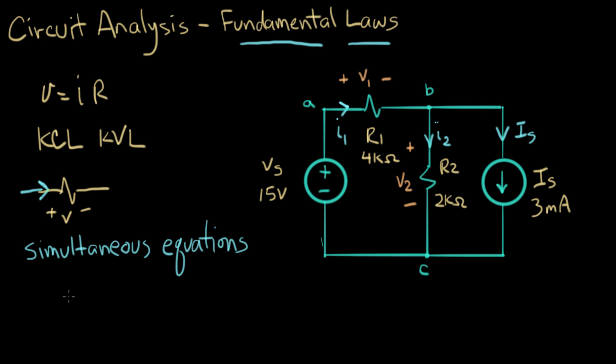So let's write down some things we know about this circuit. And first thing we're going to apply is we'll apply Ohm's law to the two resistors. So we can say V1 equals I1 times R1. And we can say that V2 equals I2 times R2.